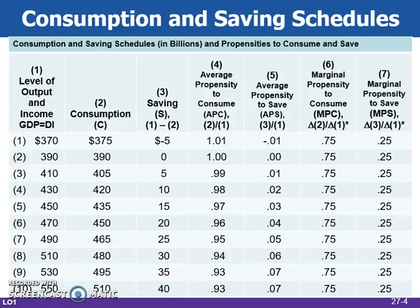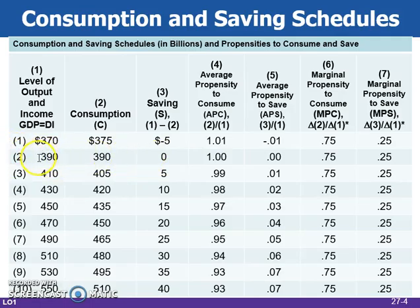This table shows the consumption and saving schedules and propensities to consume and save. A hypothetical consumption schedule shows that households spend a larger portion of a small income than of a large income, based on the APC, or average propensity to consume. Note that dis-saving occurs at low levels of income, where consumption exceeds income, and households have to borrow or use up some of their wealth. The break-even income is where C equals DI and S equals zero. In this table, the break-even income occurs when the disposable income is $390.